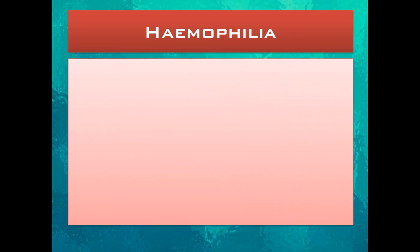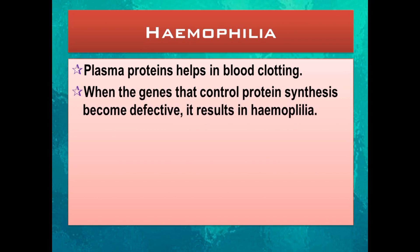Now let us see what hemophilia is. Usually, the blood clots with the help of plasma proteins. But when the genes that control protein synthesis become defective — specifically those genes actively participating in blood clotting — they become defective or non-functional, and this results in a disease called hemophilia.